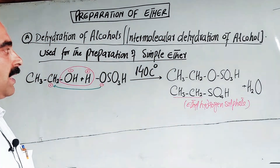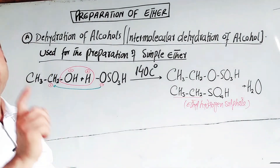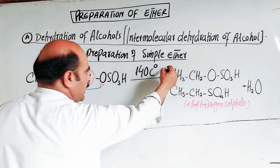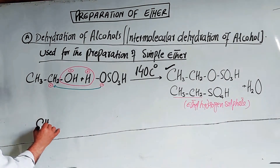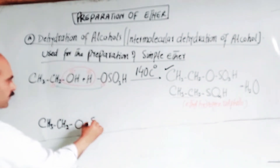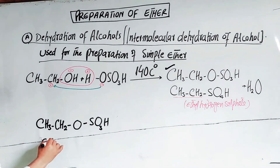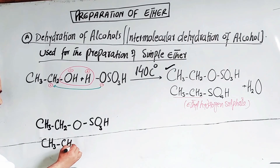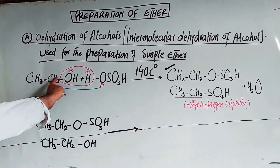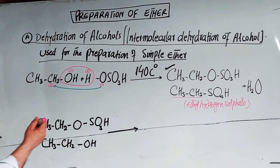To maintain the temperature at 140 degrees, alcohol must be taken in excess. Because of this excess alcohol, the intermediate compound ethyl hydrogen sulfate also reacts further. In step number two, the ethyl hydrogen sulfate reacts with an excess molecule of ethyl alcohol, CH₃CH₂OH.